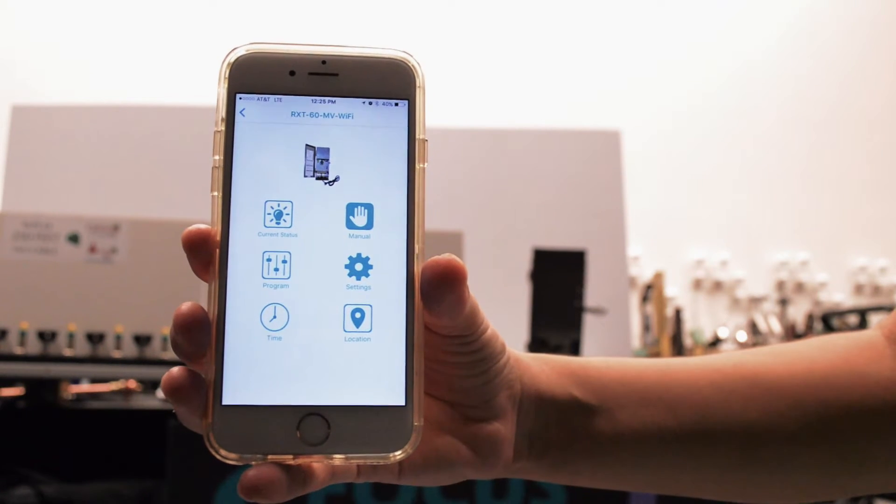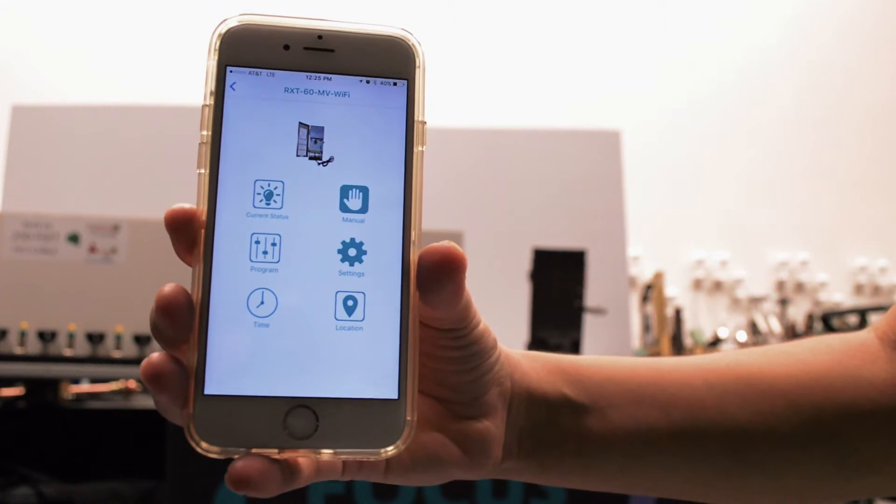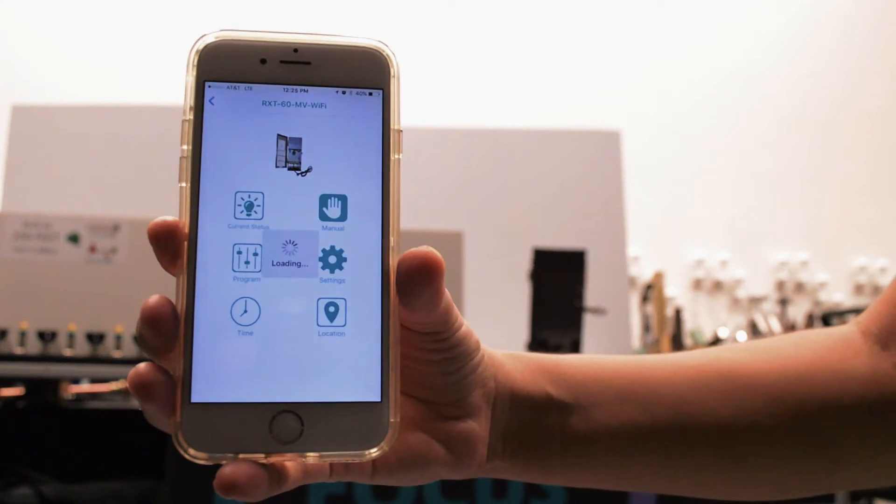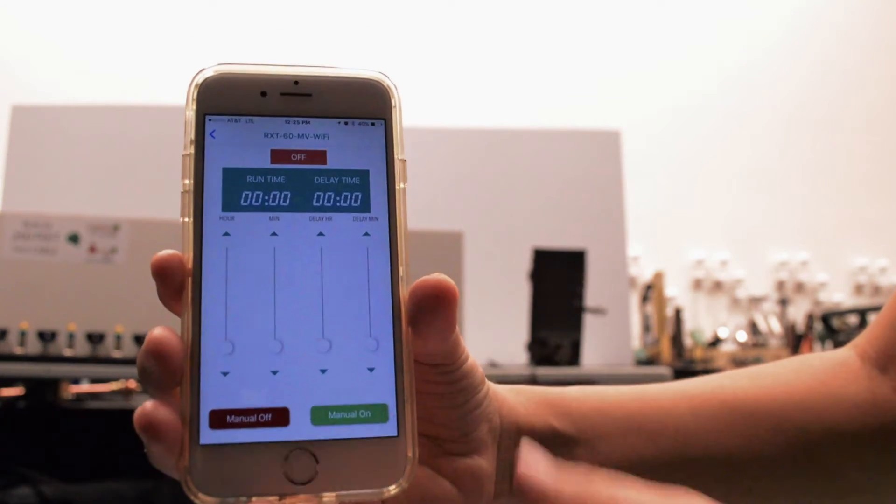If you wish to program your Transformer manually, you will need to follow these simple steps. First, press manual. Then you will see the options of runtime, time delay, ready to be set.